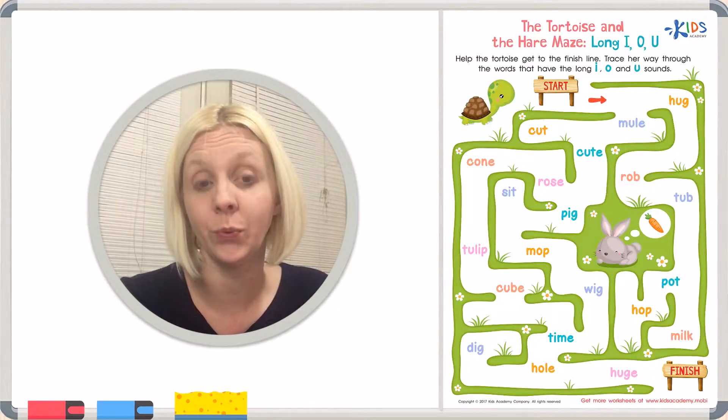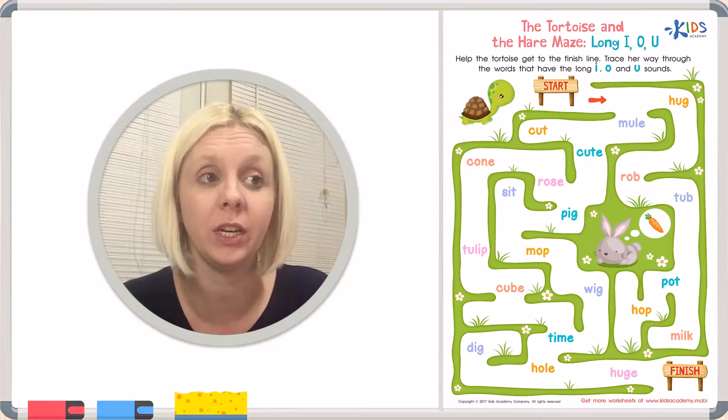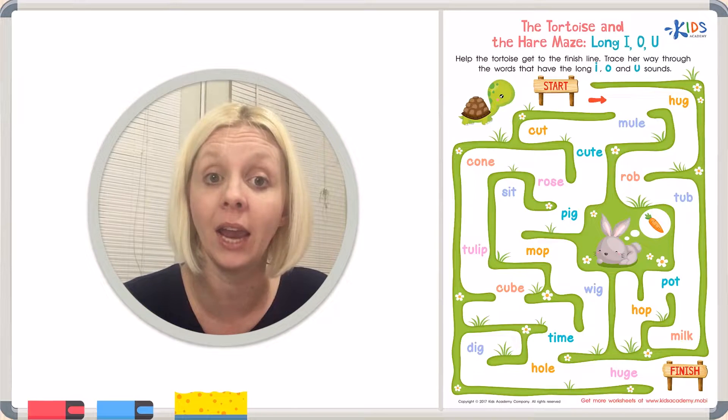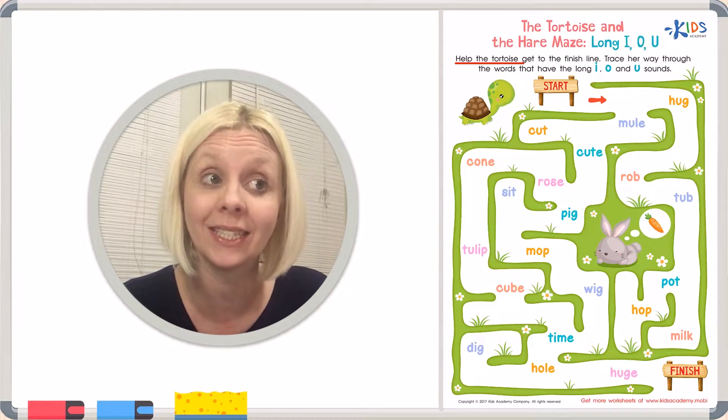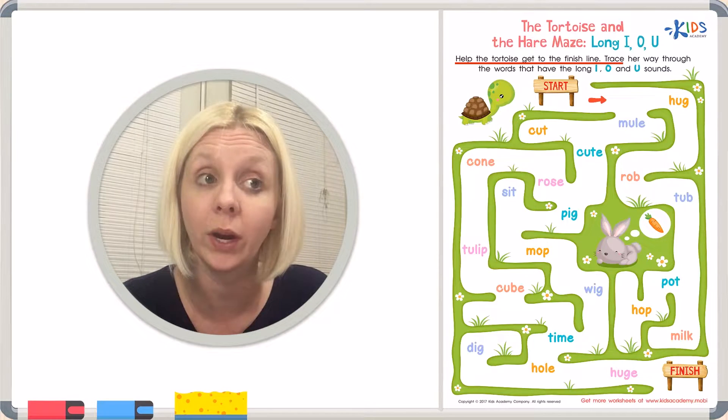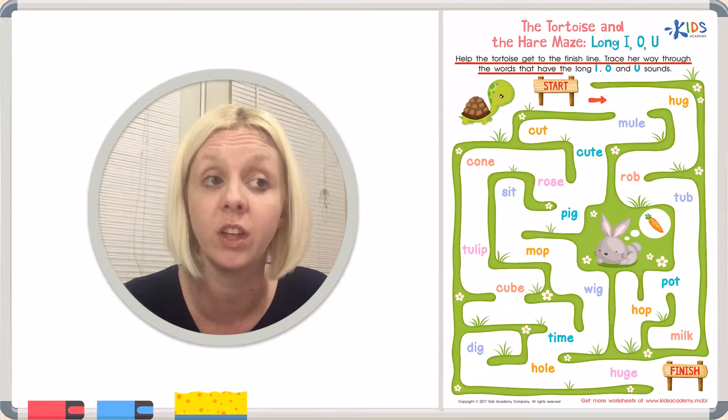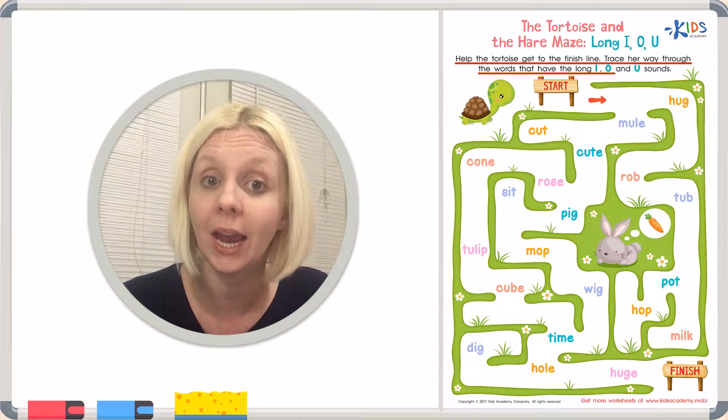We have a new worksheet today and the name of this worksheet is called the Tortoise and the Hare Maze: Long I, O, and U. And the directions say, help the tortoise get to the finish line. Trace her way through the words that have the long I, O, and U sound.